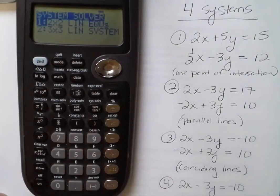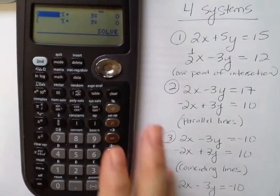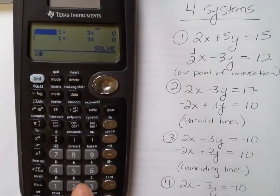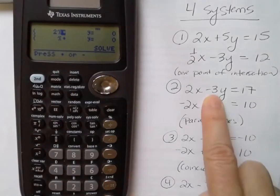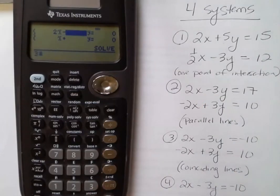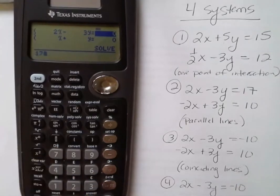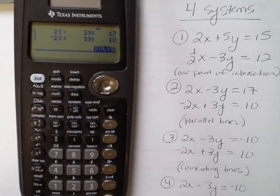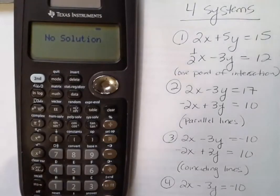Second function, SysSolve, my 2x2. I'm going to hit enter and do the next one where the lines are parallel, which means there's no point of intersection. So how does it handle that? I enter 2, then minus 3y — looking at this problem right here — then equals 17. Then I have negative 2 down here, plus 3y, and 10. That is a system with no solution. As soon as you hit enter, it's going to show you 'no solution,' meaning the lines would be parallel if you drew them.